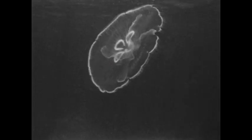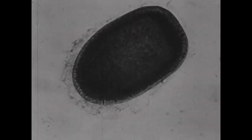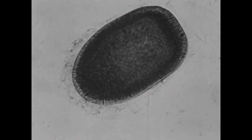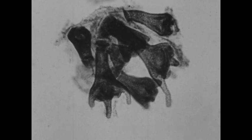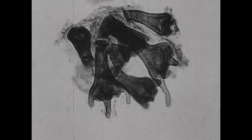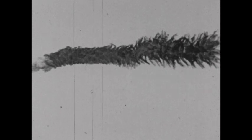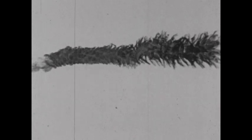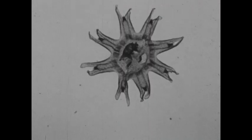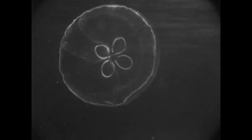At its sexual stage, the aurelia produces a ciliated larva called a planula. This grows into a polyp, a small body with tentacles. Now the aurelia enters its asexual stage. As the aurelia polyp feeds and grows, it buds off into small polyps like itself. In the winter season, the polyp develops constrictions until it resembles a series of discs on a stick. One by one, the disc-like polyps pinch off from the parent. Each one develops into an adult jellyfish.